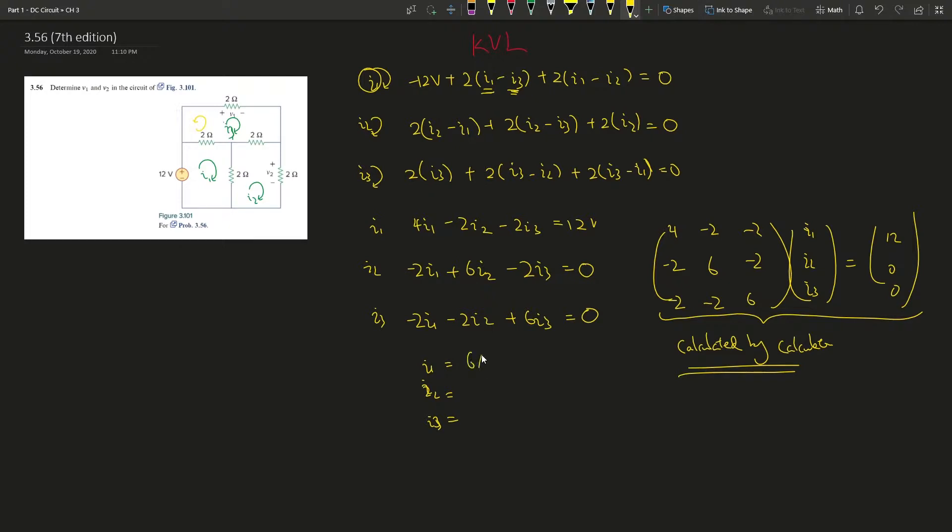So what would that be? So i1 is 6 amperes, i2 is 3 amperes, and then i3 is 3 amperes. Okay, so we keep being asked what is v1 and v2.